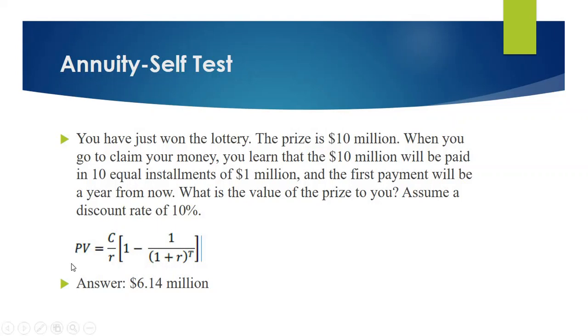So here, your cash flow C will be 1 million dollars divided by R, which is the discount rate, 10% or 0.1, and your value of T will be 10. Your answer is 6.14 million dollars.